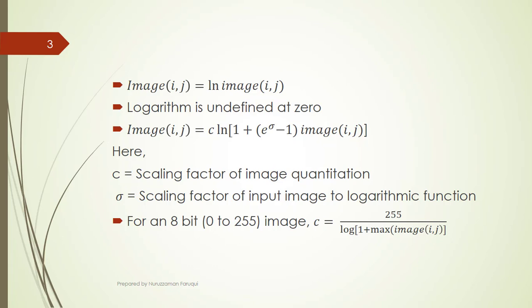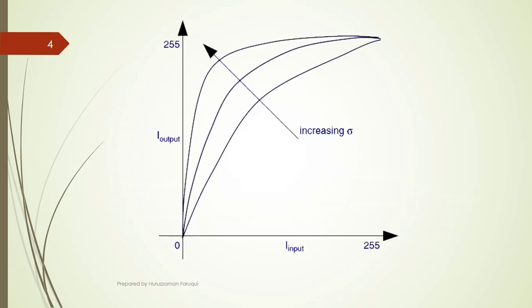Here, max image(i,j) represents the maximum pixel value of the image. In this graph, the x-axis is from 0 to 255, representing the pixel value of input image. The y-axis is also from 0 to 255, representing the pixel value of output image.